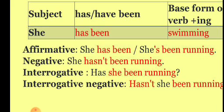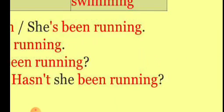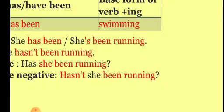For interrogative negative, the structure is: has/have plus not plus subject plus been plus base form of verb plus -ing. For example: Hasn't she been running?